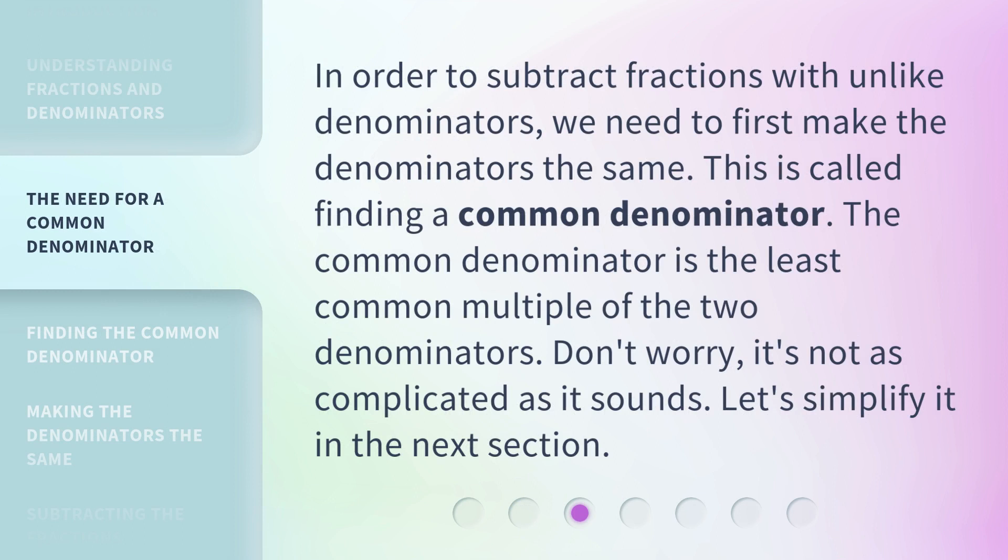In order to subtract fractions with unlike denominators, we need to first make the denominators the same. This is called finding a common denominator. The common denominator is the least common multiple of the two denominators. Don't worry, it's not as complicated as it sounds. Let's simplify it in the next section.